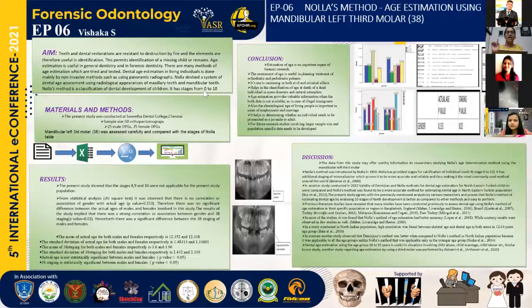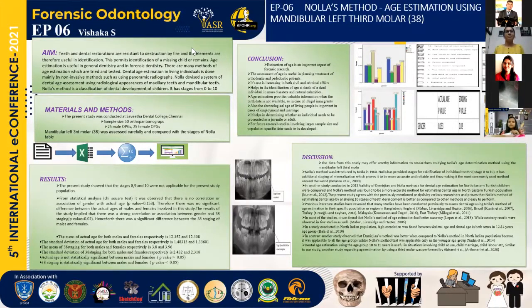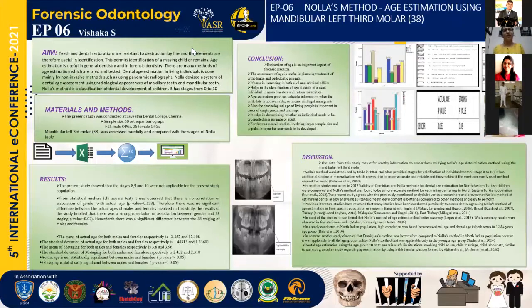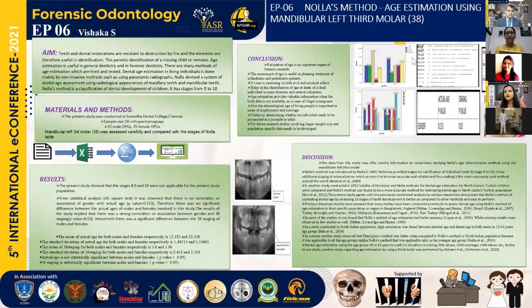Reviewing supporting literature: Bolinus et al. (2000) noted that Nolla provided stages for calcification of individual teeth, making it more accurate and reliable, and thus the most commonly used method worldwide. Since Nolla's method is easy, inexpensive, and less time-consuming, it is considered better than methods like Demirjian's and Williams' method, with Nolla's more precise multi-stage system being an additional advantage. A study by Nur et al. (2012) in a Northeastern Turkish population assessed the validity of Demirjian's versus Nolla's method, finding that Nolla's method was more accurate while Demirjian's showed some underestimation of age. Many other studies using Nolla's method have been conducted globally, including in England, Bangladesh, and Malaysia.